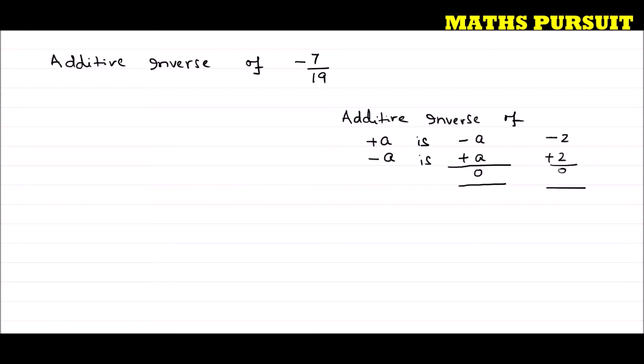Now, the question is asking us to find out the additive inverse of minus 7 by 19. So the additive inverse of minus 7 upon 19 is 7 upon 19.